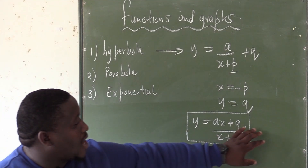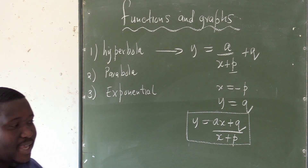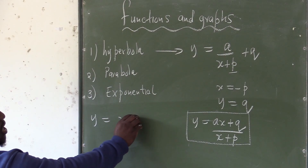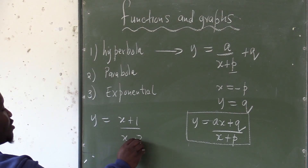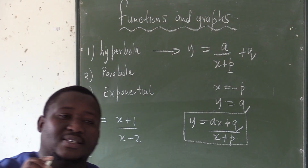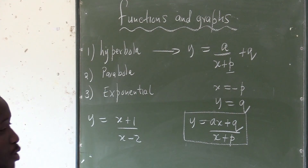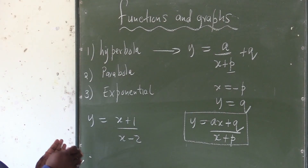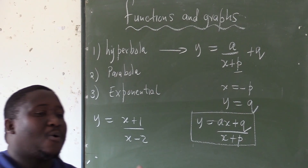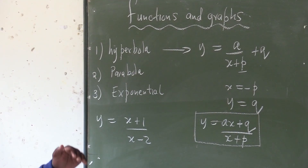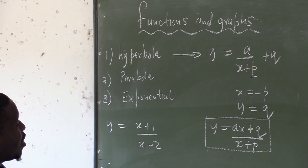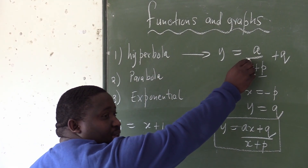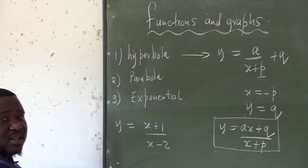Let me make an example. Let us say you come across y equals to x plus 1 over x minus 2, and the question says to us: determine the equations of the asymptotes. It is clear that this is the hyperbola. But how are we going to determine the equations of the asymptotes? We must be able to convert this form back to the standard form.